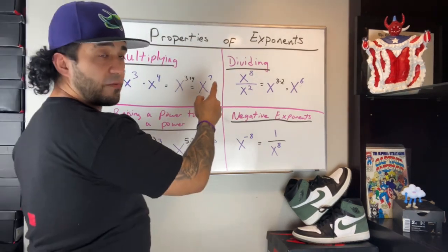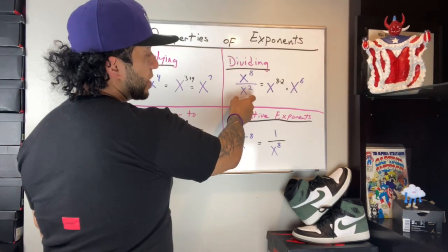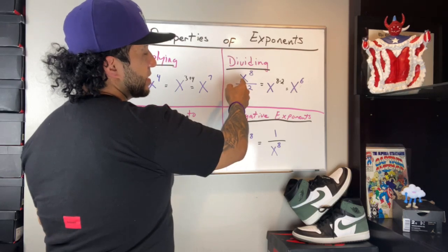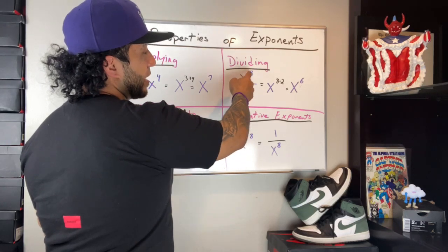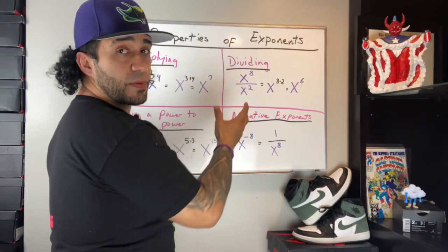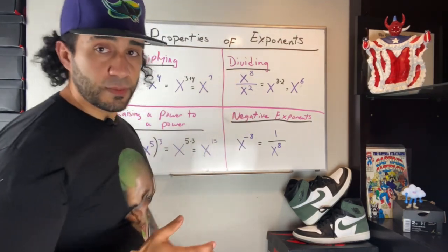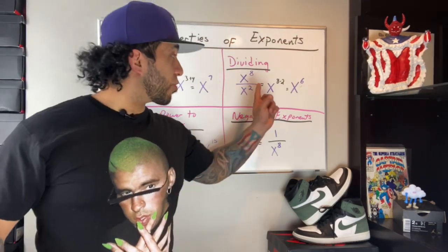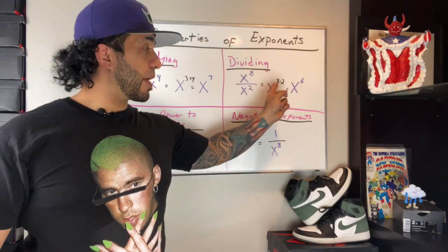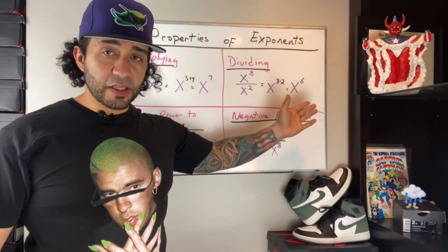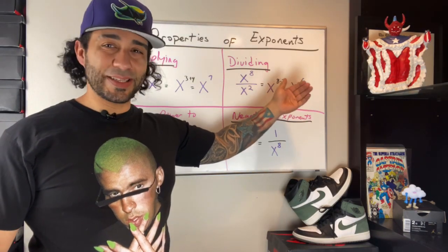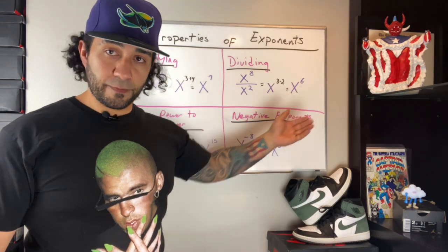Suppose you're dividing. In this instance we have a base of x, and we're being asked to divide x to the eighth power by x to the second power. We keep the base of x, and we subtract 8 minus 2. 8 minus 2 is 6, which gives us a final response of x to the sixth power, if you're dividing.